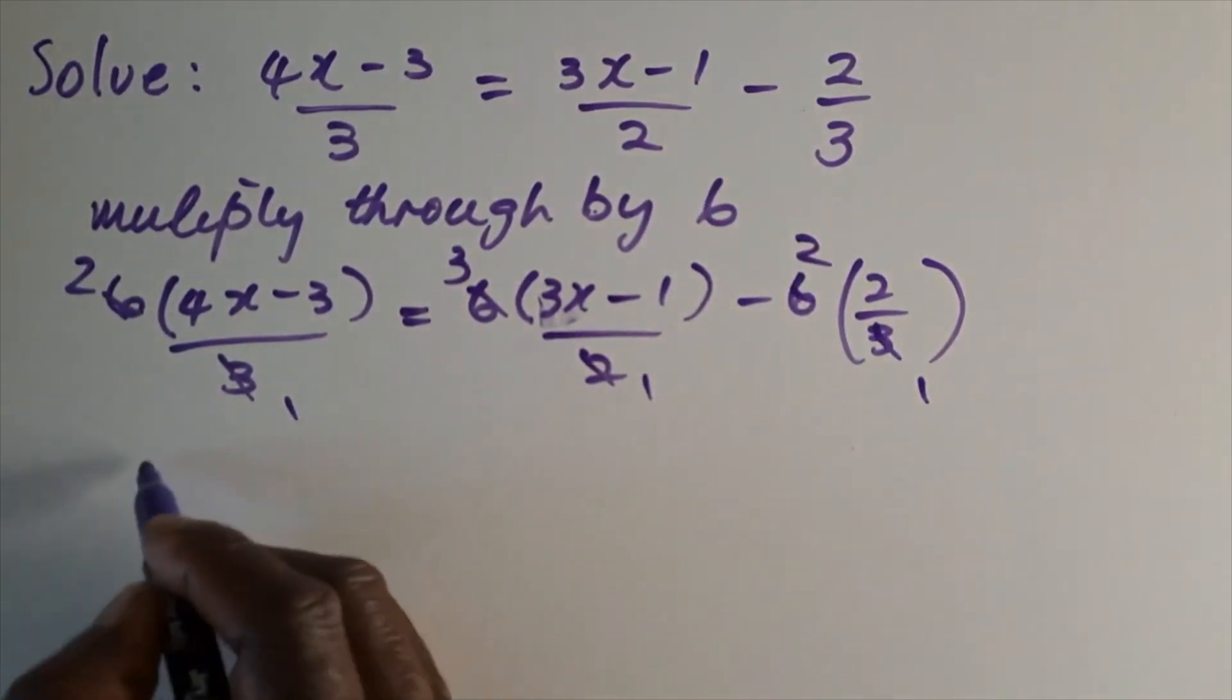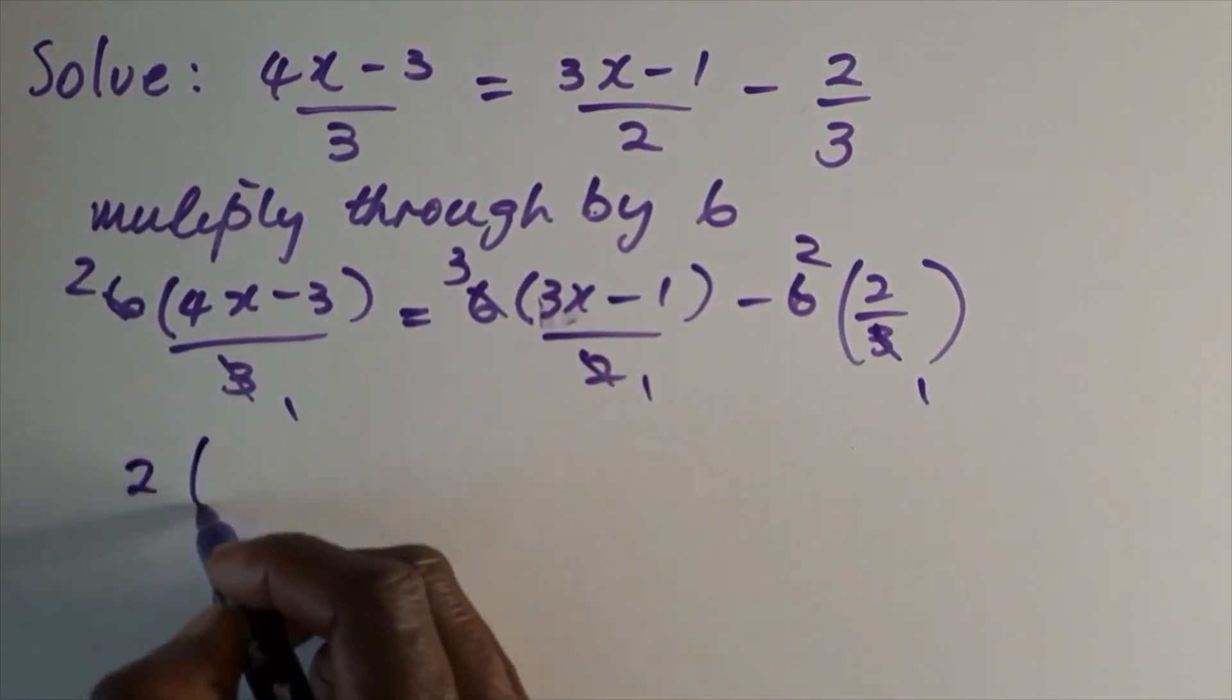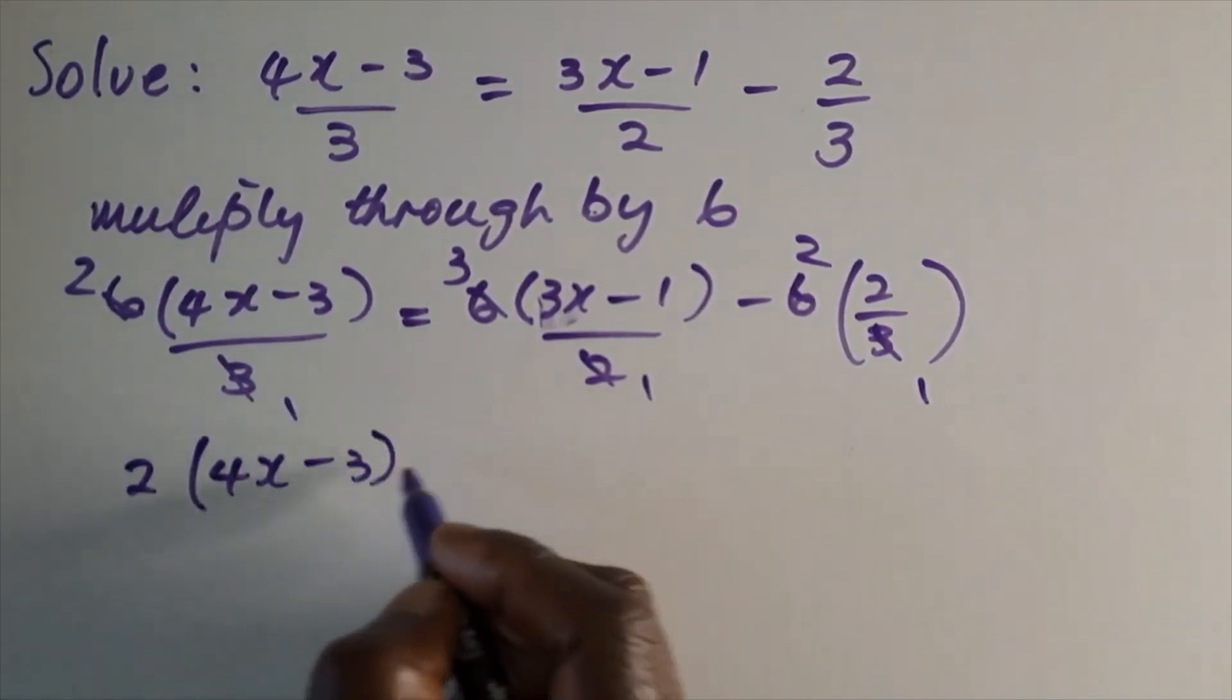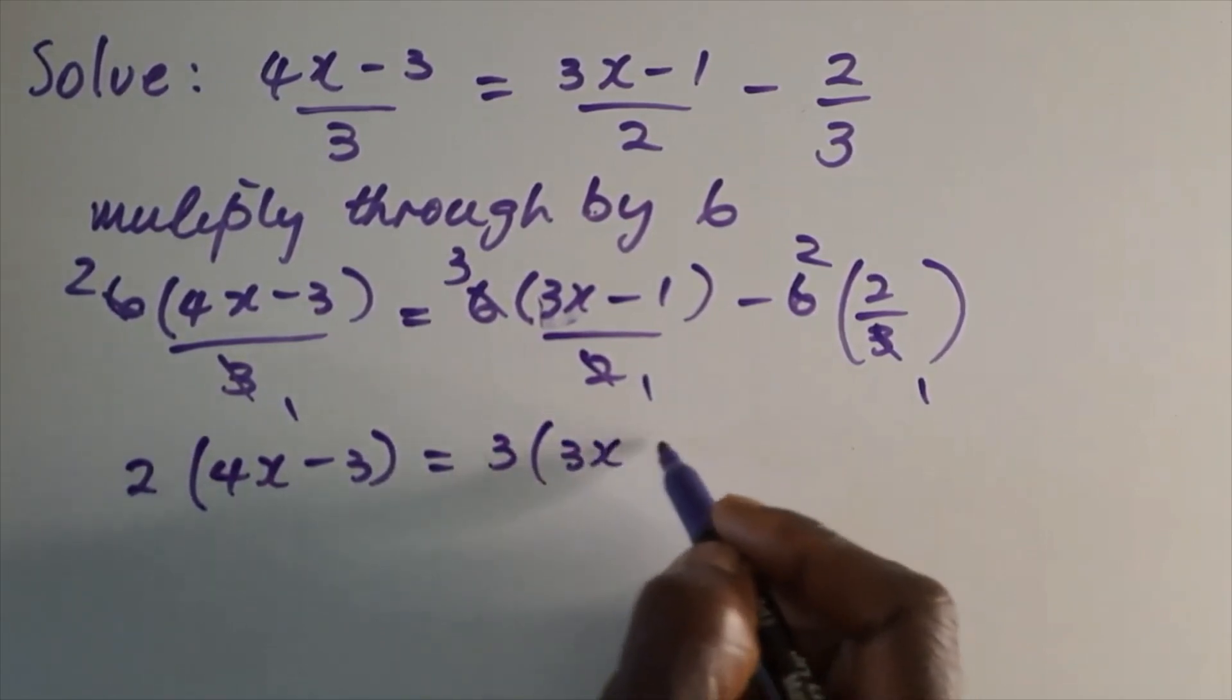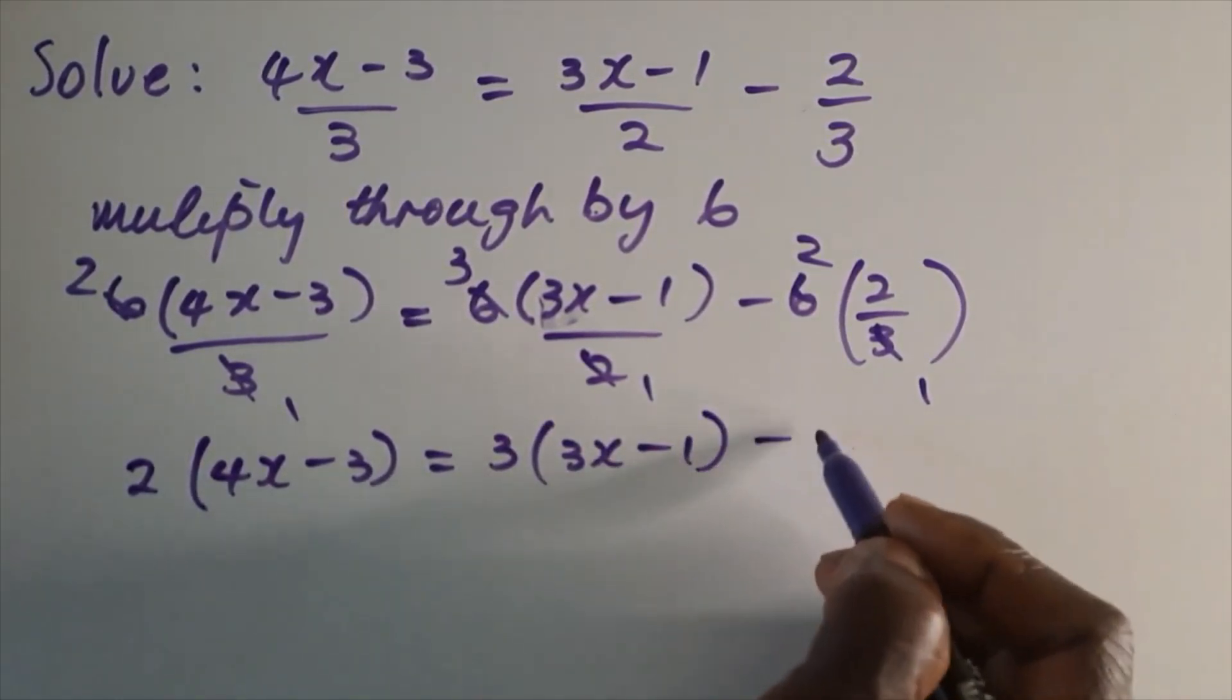And now this is reduced to 2(4x-3) = 3(3x-1) - 4.